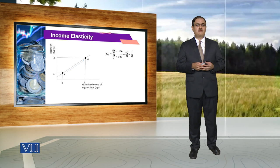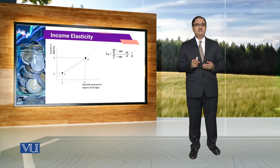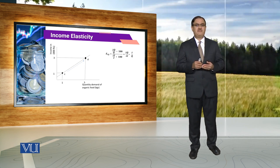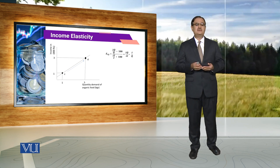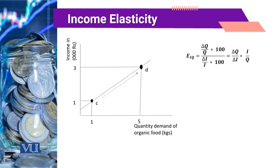For the computation of income elasticity of demand, we use a formula where change in quantity over change in income is multiplied by the point of reference of income and quantity — that is, I over Q. These values of income and quantity demanded are the reference points at which we want to compute the income elasticity of demand.